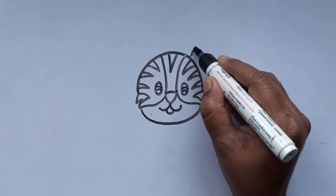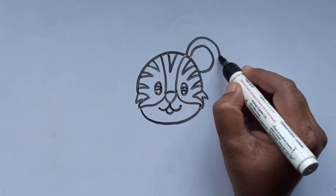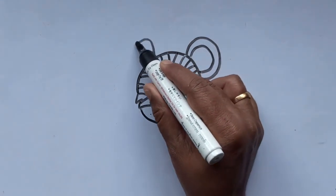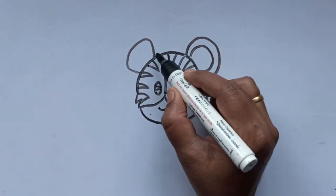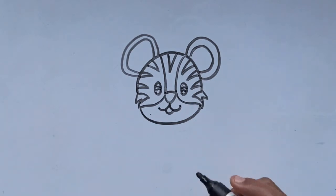Let's add the ears now. Draw the double line here and do the same on the other side. I heard that tiger cubs leave their mother when they are 2 years old.